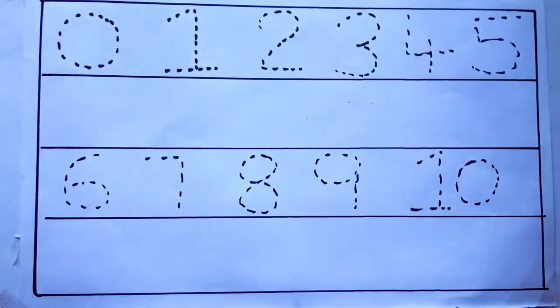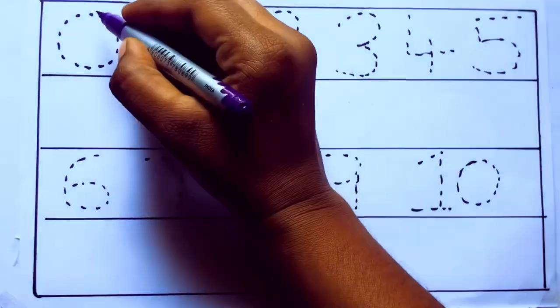Let's draw numbers. Violet color 0, Z-E-R-O.